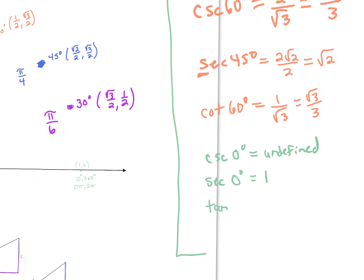One last one: tangent of 0 degrees. Tangent is y over x. At 0 degrees the y-value is 0, so we have 0 over 1, which equals 0. Note that tangent is not a reciprocal function — you don't flip for tangent.